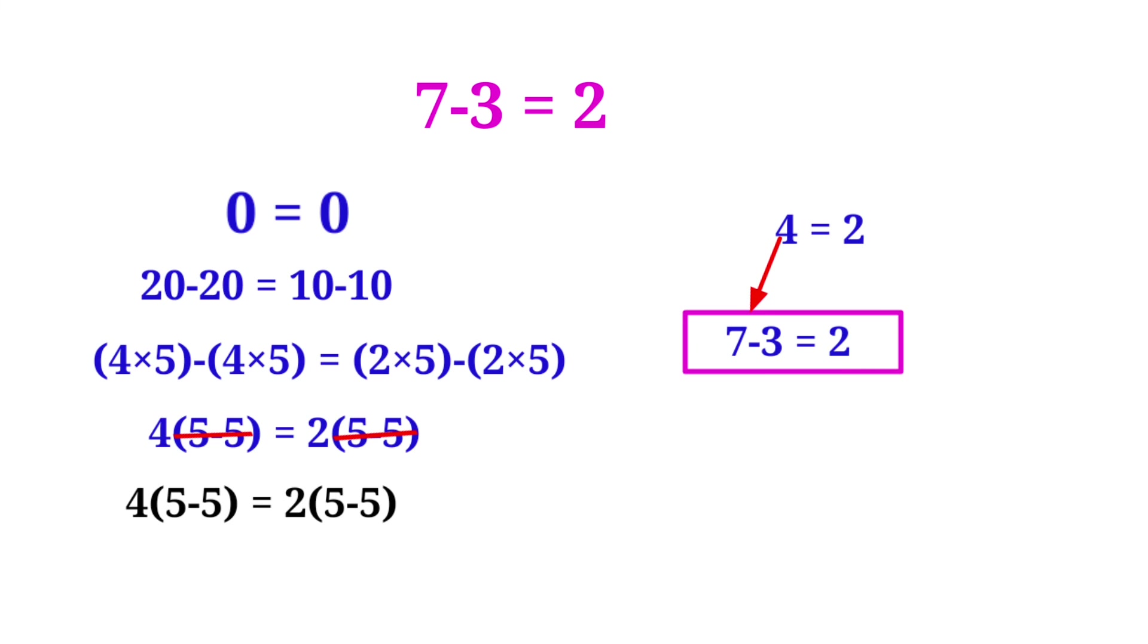4×5-5 is equal to 2×5-5. Actually 5-5 is equal to 0, so we can write as 4×0 is equal to 2×0.